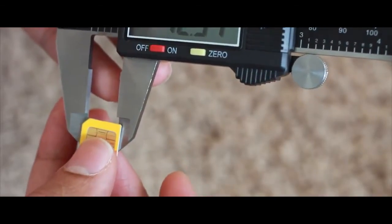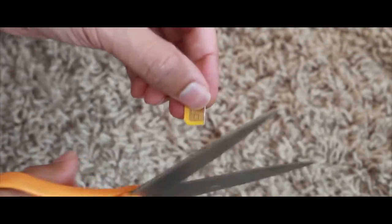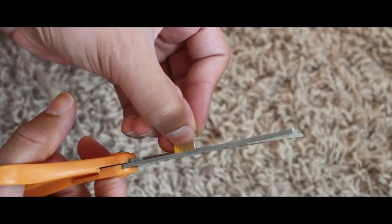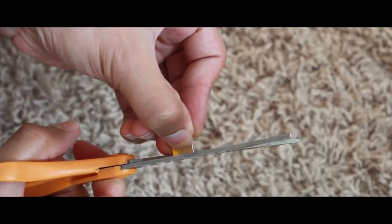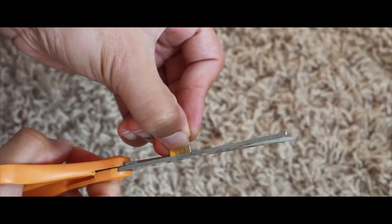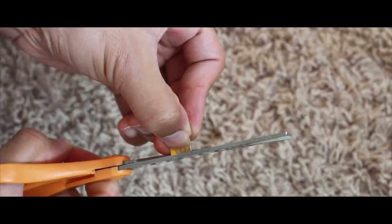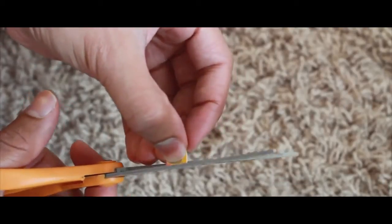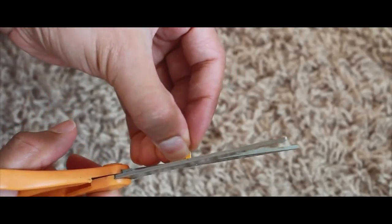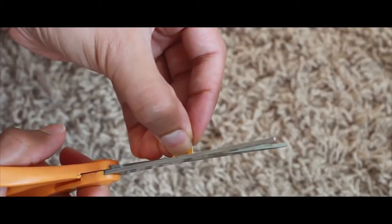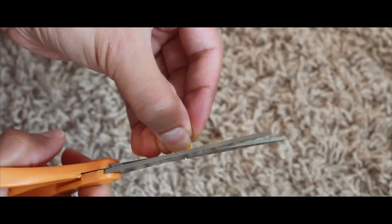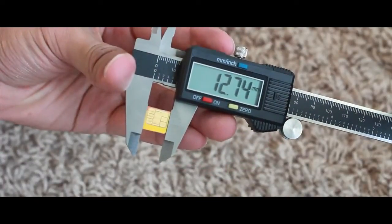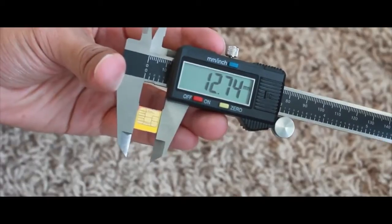I have some excess to cut off here on the edge, so I'm just going to take a pair of scissors and be really careful not to actually cut the chip itself, but just trim the excess plastic away from the sides of the micro SIM. There we go, there's one side. Here's the other side. Here's the current measurement: 12.74. So we're still pretty far away from that 12.3. We still need some extra trimming.